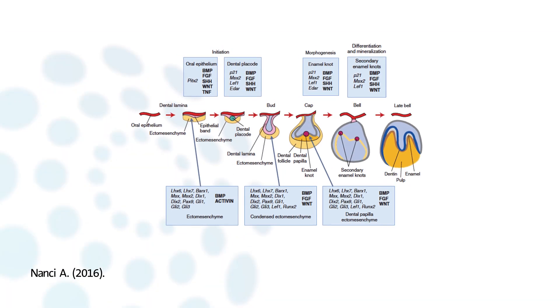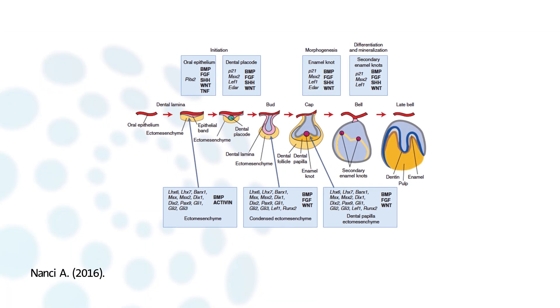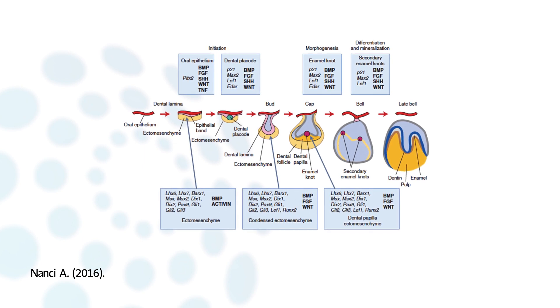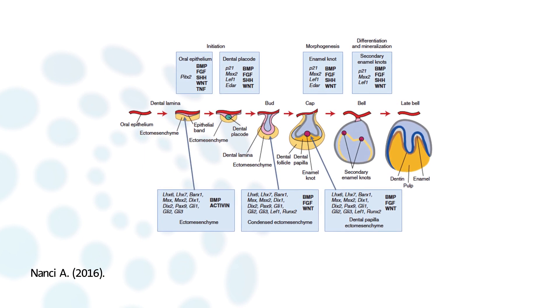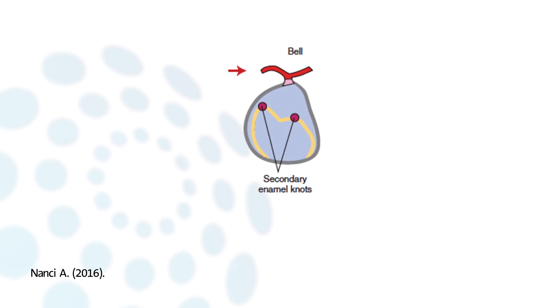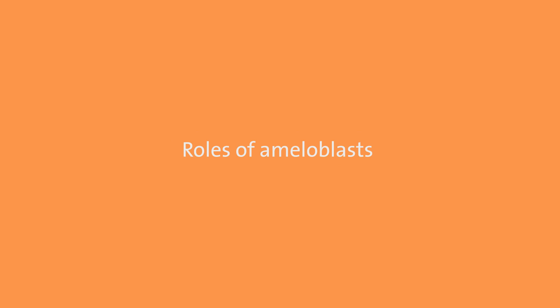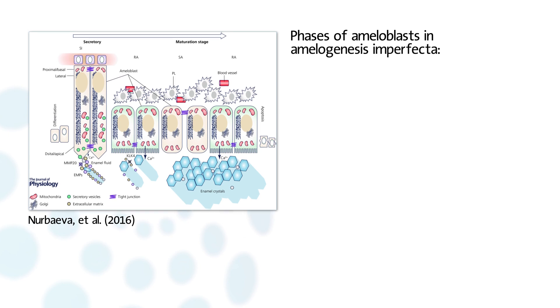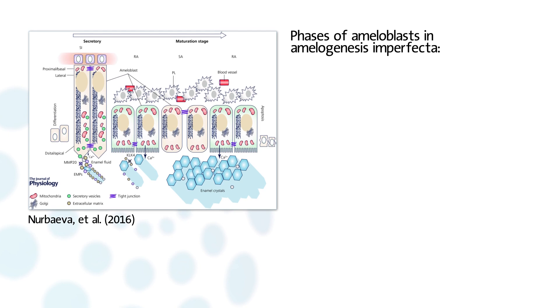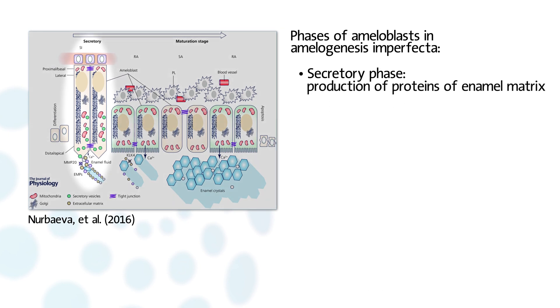Ameloblasts are the specialized cells in charge of enamel formation. They differentiate from the inner dental epithelium originating from the oral ectoderm during the bell stage of odontogenesis. Ameloblasts assume multiple roles during amelogenesis. They produce the proteins of the highly organized enamel matrix — such as enamelin, amelogenin, and ameloblastin — in the secretory phase.